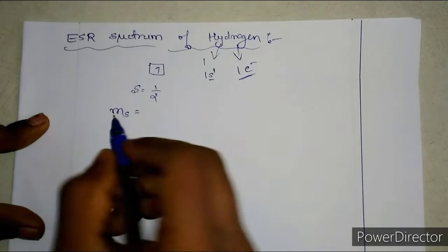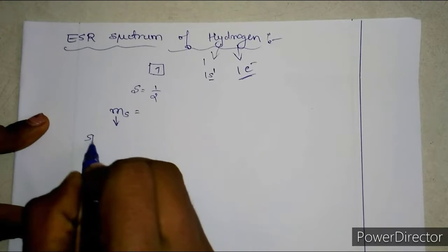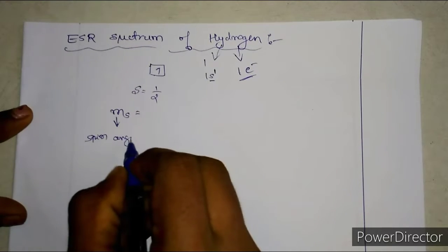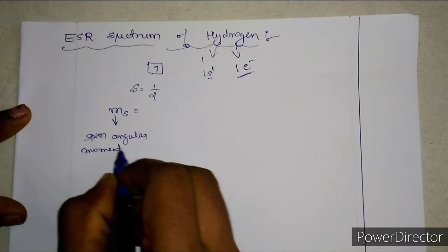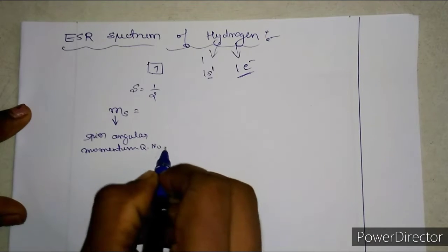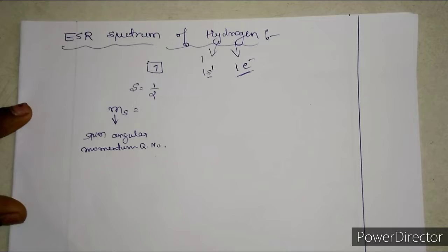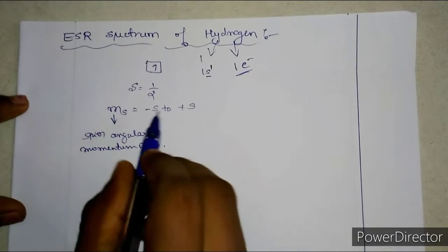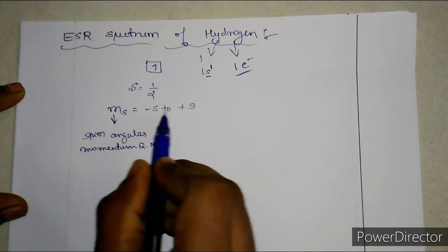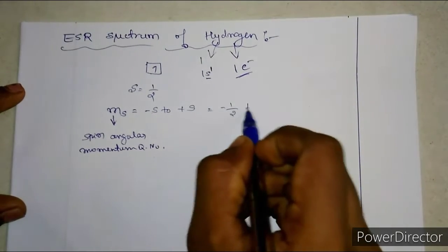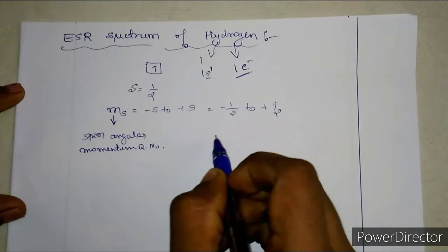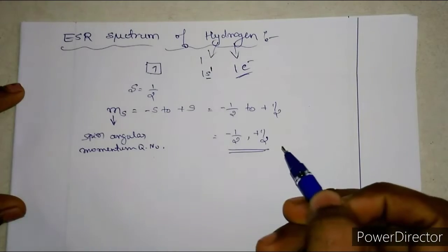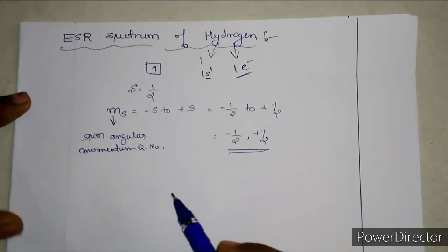What is the MS value? MS is the spin angular momentum quantum number, given by minus S to plus S. So the MS value ranges from minus S to plus S, which means minus 1/2 to plus 1/2. That means there are two MS values: minus 1/2 and plus 1/2. So there are two MS values for the hydrogen nucleus.